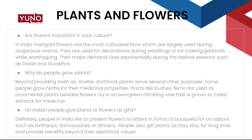Why do people grow plants? Beyond providing fresh air, shelter, and food, plants serve several other purposes. Some people grow herbs for their medicinal properties. Plants like bushes and ferns are used as ornamental plants besides flowers. Ivy is an evergreen climbing vine that is grown to make extracts for medicine.